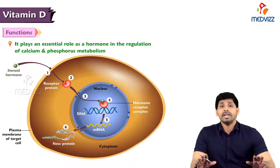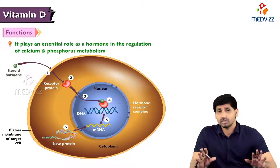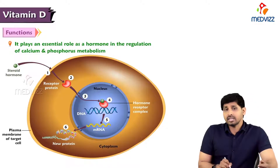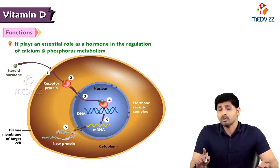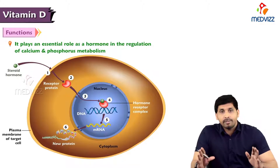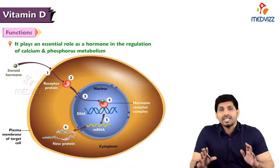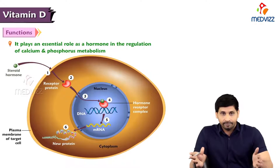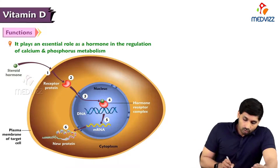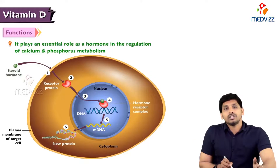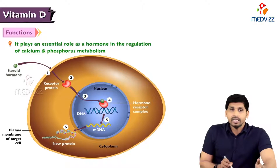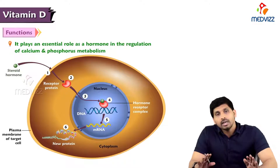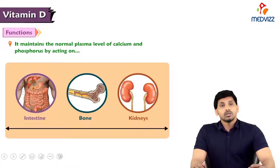So how does vitamin D stimulate DNA and help calcium-phosphorus metabolism? When it binds to DNA, it produces mRNA, which directs the synthesis of calcium binding proteins, CABP. Calcium binding proteins play a major role in absorption and reabsorption of calcium from the intestine and kidney, thereby enhancing calcium absorption and reabsorption.